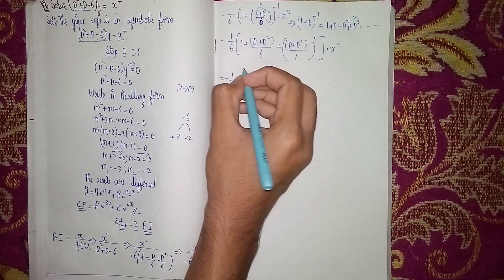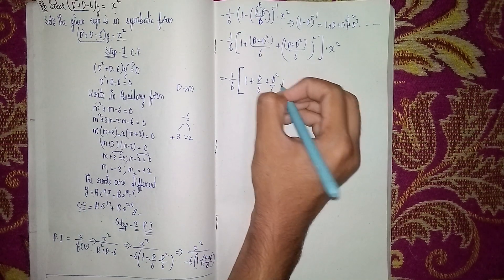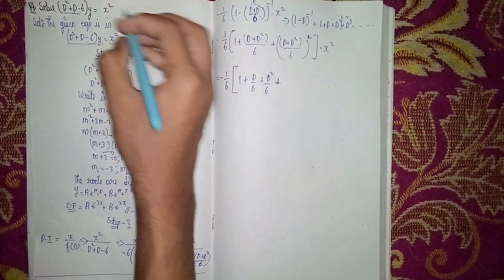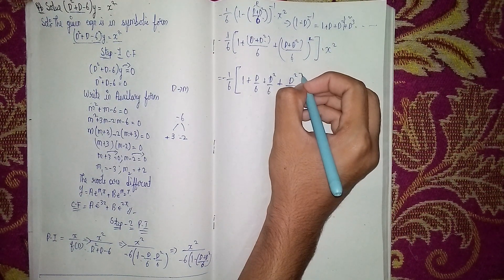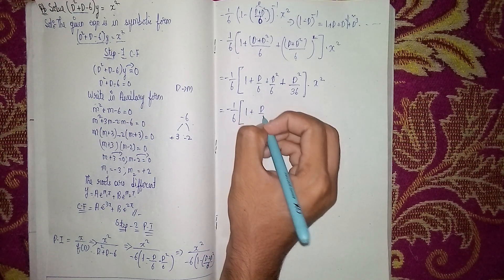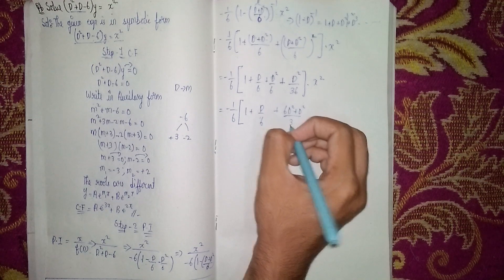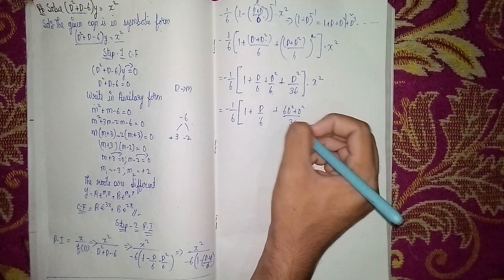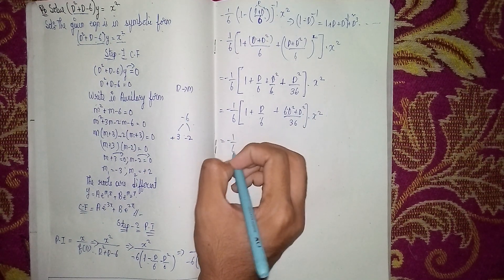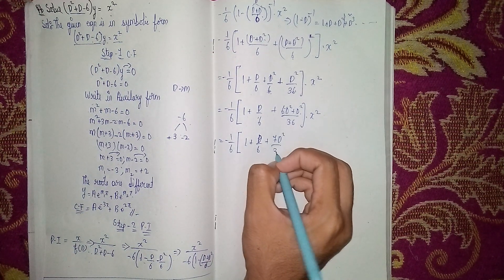Expanding: -1/6 · [1 + d/6 + d²/6 + d²/36] · x². Taking LCM of the d² terms: 6d²/36 + d²/36 = 7d²/36. So this becomes -1/6 · [1 + d/6 + 7d²/36] · x².